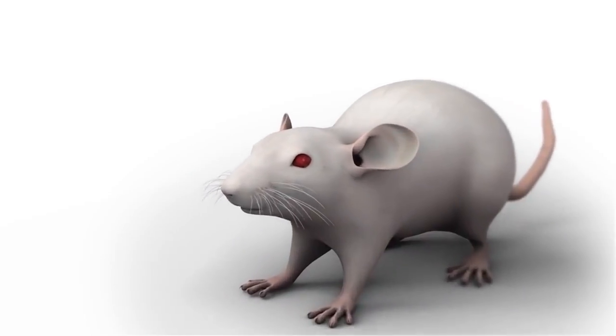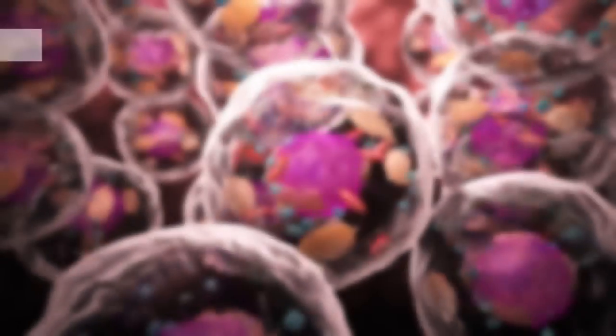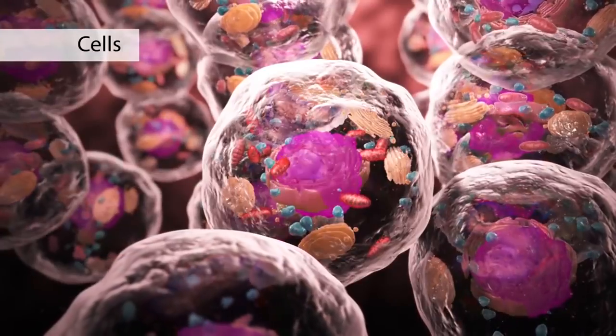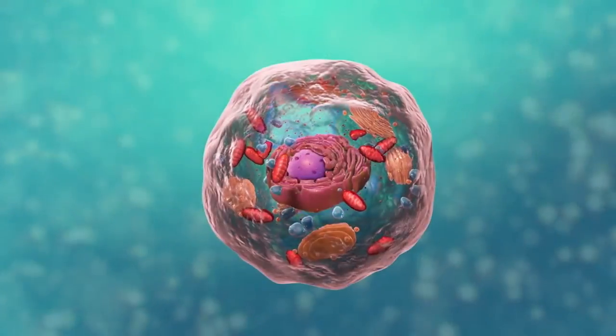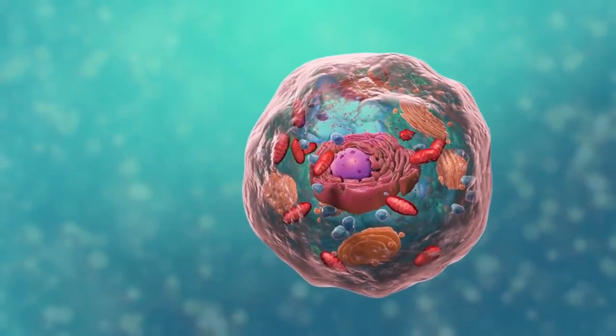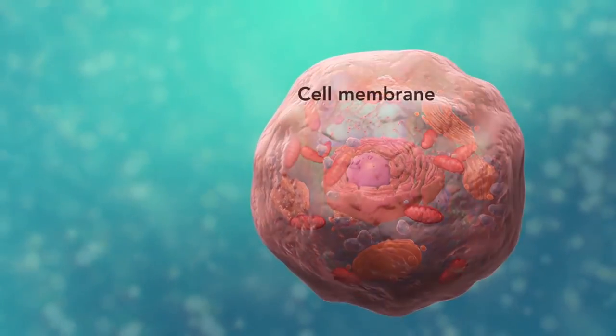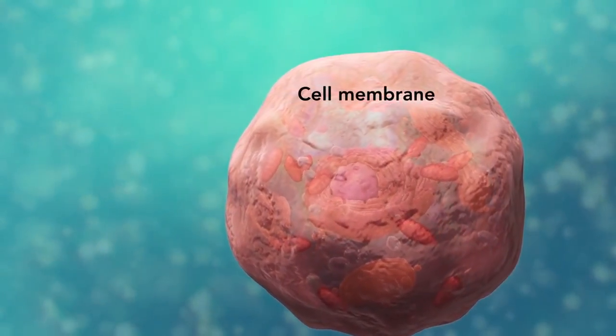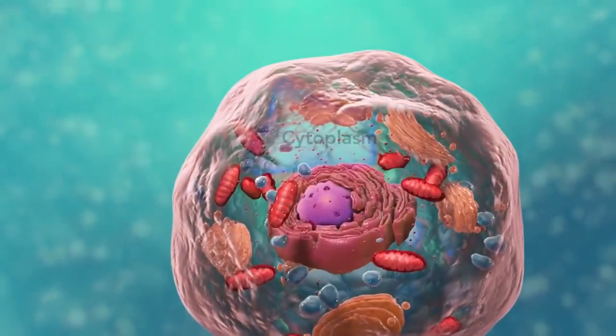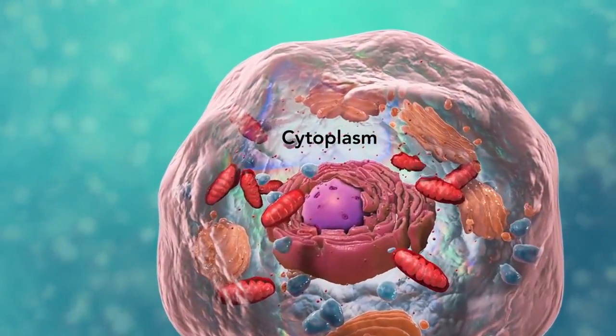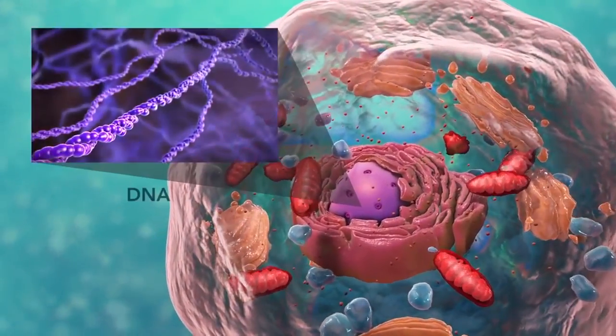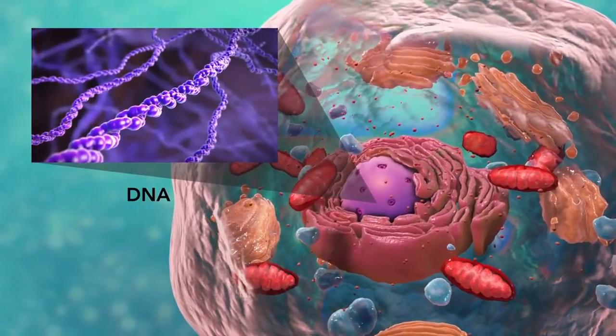Cells are the smallest living units of an organism. All cells have three things in common no matter what type of cell they are. All cells have a cell membrane which separates the inside of the cell from its environment, cytoplasm which is a jelly-like fluid, and DNA which is the cell's genetic material.